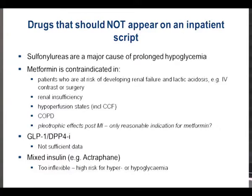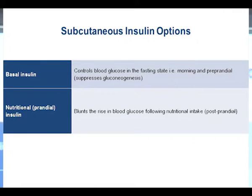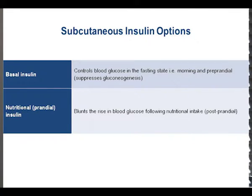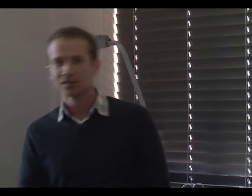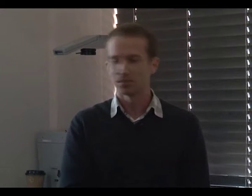The answer is a basal bolus approach. Basal insulin is long-acting — in the fasting state it suppresses gluconeogenesis, because your body's default is to produce as much glucose as possible and insulin suppresses that. Then nutritional or bolus insulin is a shorter-acting insulin given with every single meal. The advantage is if a patient does not take a meal, they do not get the bolus insulin. With Actraphane twice daily you cannot omit a component, but with basal bolus you can simply omit the short-acting insulin if the patient vomits their meal.